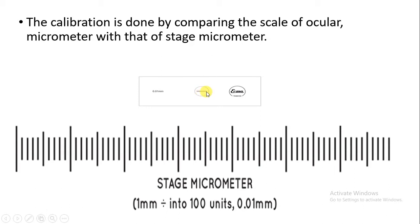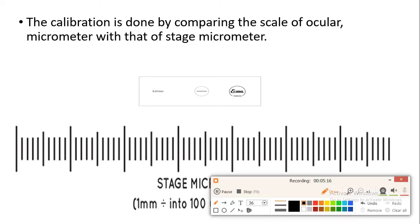This line given is of 1 mm, and there are about 100 divisions. So we can say 1 upon 100 is equal to 0.01 mm. The partition is 10 micrometers apart. So in this way, we have got to know what exactly the size is.